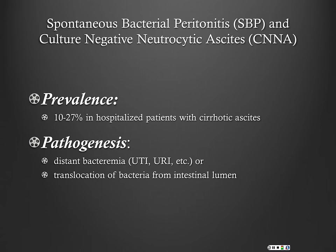Moving to complications of ascites: SBP is our biggest concern and what we see most commonly. The prevalence is 10 to 27% of cirrhotic patients in the hospital — which is why we always need to tap our cirrhotics when they come in. There are two terms: SBP and CNNA, which we'll discuss.